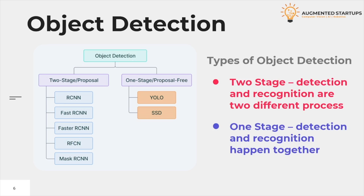Object detection can be classified into two categories: two-stage object detection and one-stage object detection. The stage here refers to the processes. The two processes of two-stage object detection are detecting the possible bounding box region in which the object might be present, and classifying that object according to the class. Commonly used two-stage algorithms include RCNN, FastRCNN, FasterRCNN, MaskRCNN, and RFCN. One-stage object detection combines both detecting the bounding box region and classifying the object in a single stage. Algorithms like YOLO made this possible by using an intuitive neural network that performs detection and class probability prediction simultaneously.